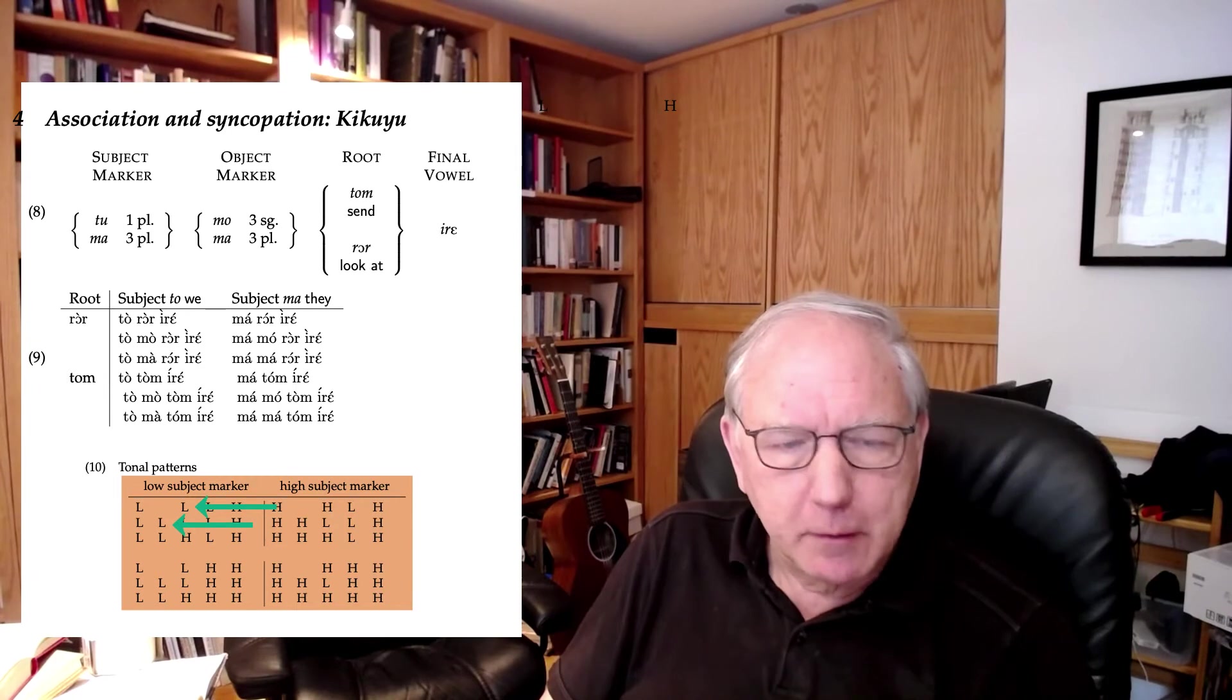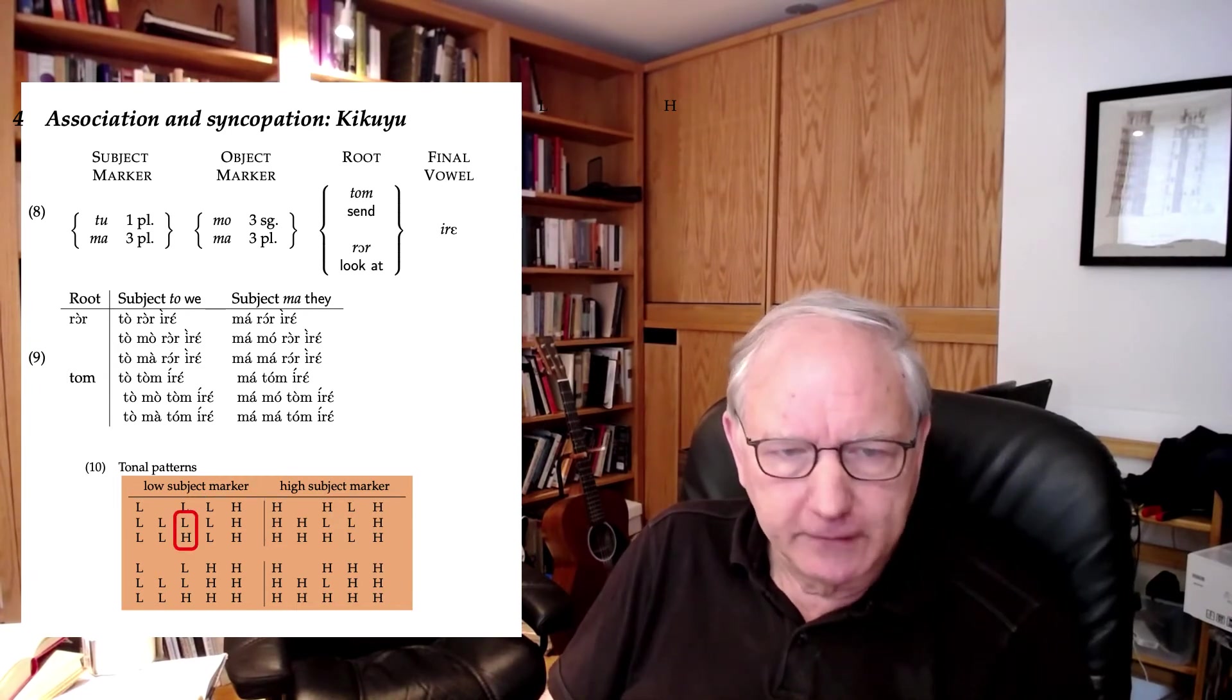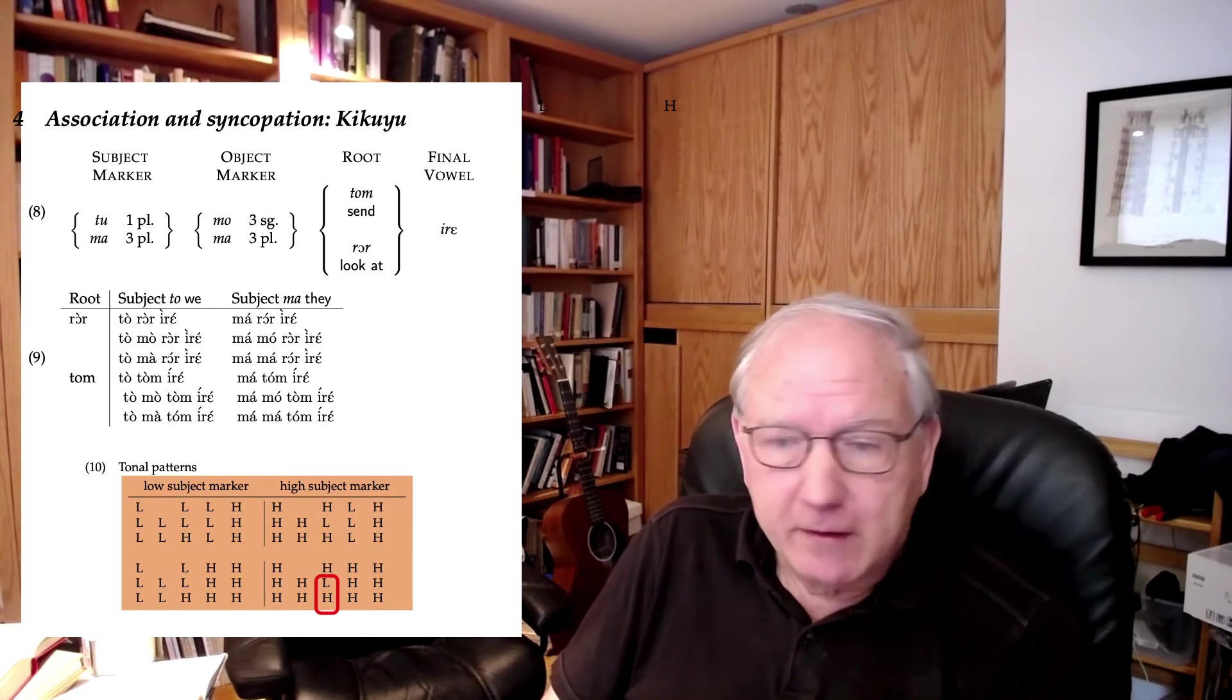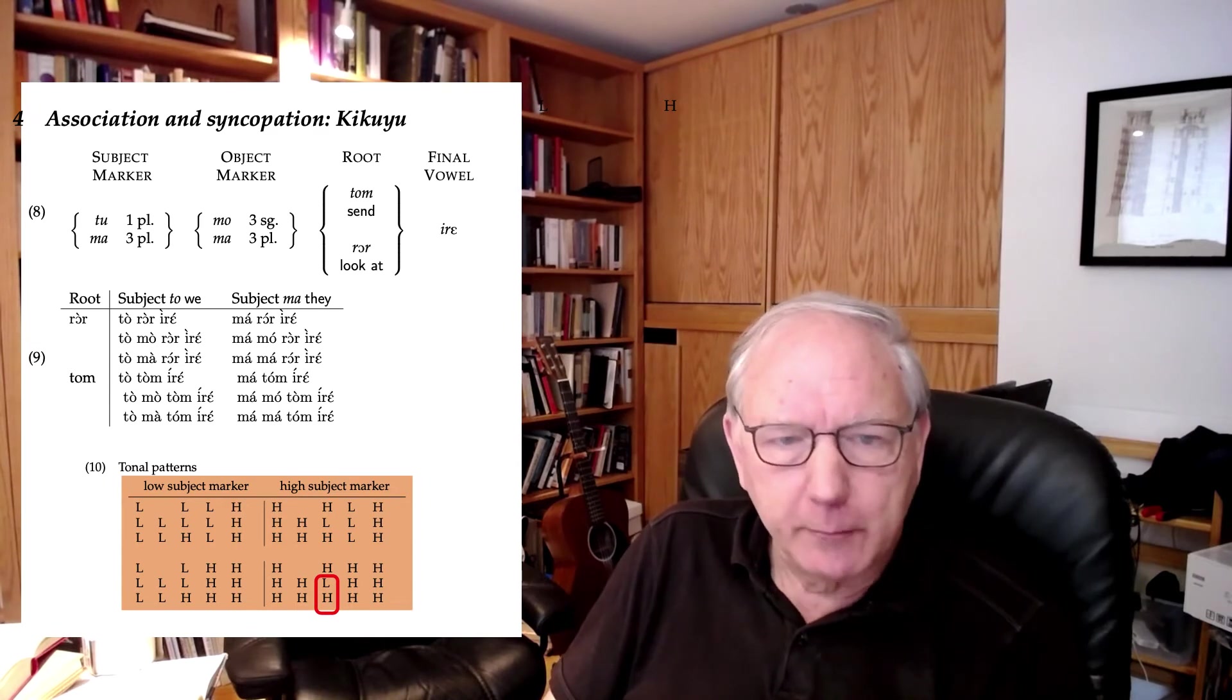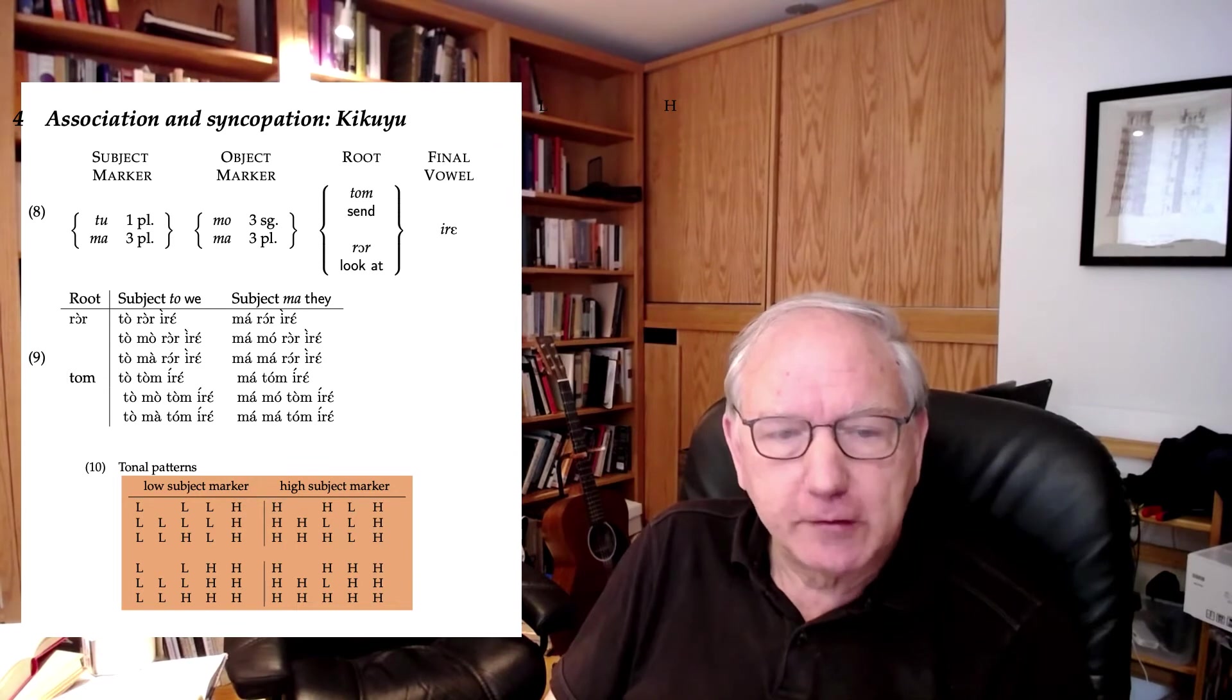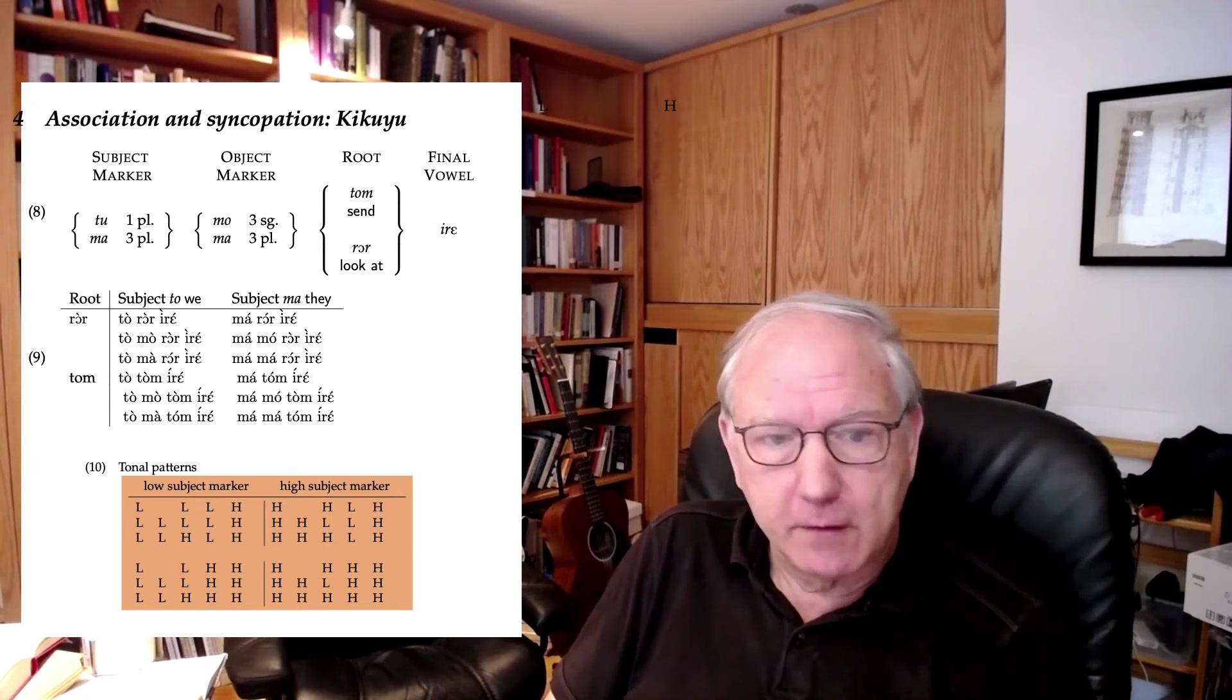What does the verb root do, or what tone does it have? When there is an object marker, on the left it's low-high, low-high, and on the right it's low-high, low-high. So it just depends which tonal group the object marker comes from. So the tone that appears on the root will be determined by the choice of the object marker if there is one. If there isn't an object marker, we've already seen the tone on the root is the same as the tone on the subject marker.